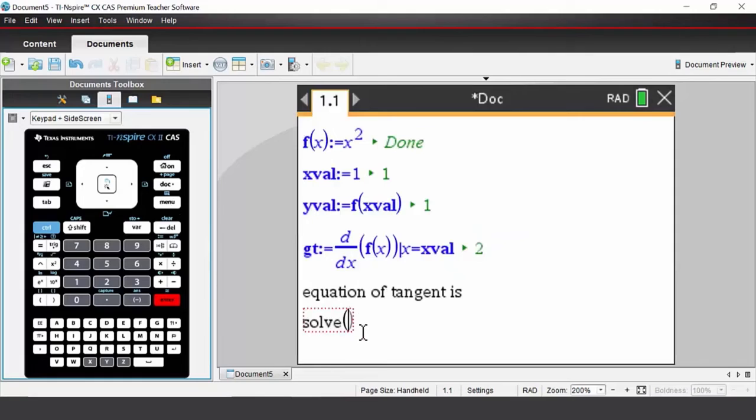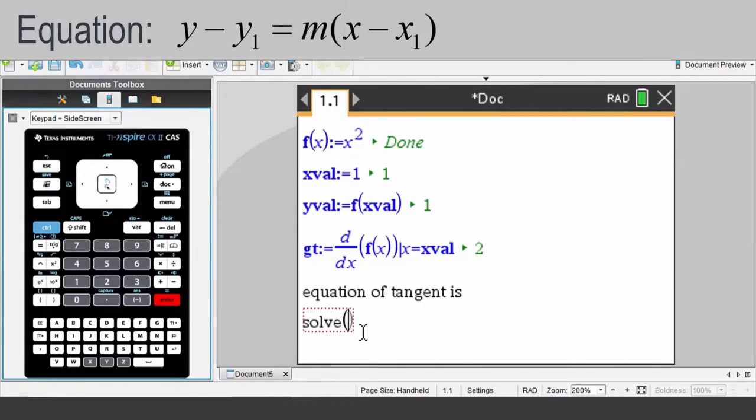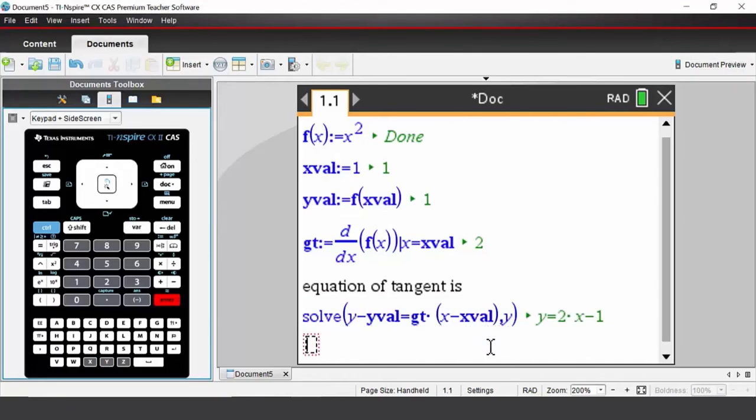You could have typed in the word solve also. We're going to solve y minus your y value, so access that from the var key, equals the gradient of the tangent (var key again, gt) multiplied by bracket x minus my x value (once again under the var key). We're going to solve that for y. What this is doing is using the point gradient formula, and it's going to solve the point gradient formula for y. Press enter, and the result is the equation of the tangent.